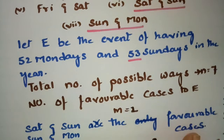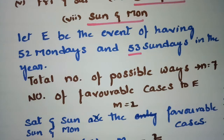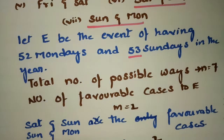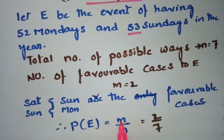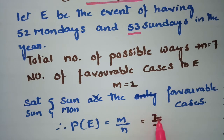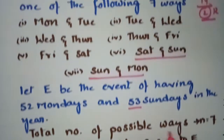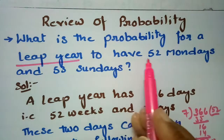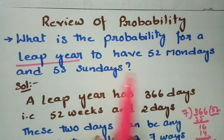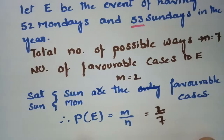The number of favorable cases M is equal to 2, corresponding to Saturday-Sunday and Sunday-Monday. Therefore the probability is equal to M by N, where M is 2 and N is 7. So the probability for a leap year to have 52 Mondays and 53 Sundays is 2 by 7.